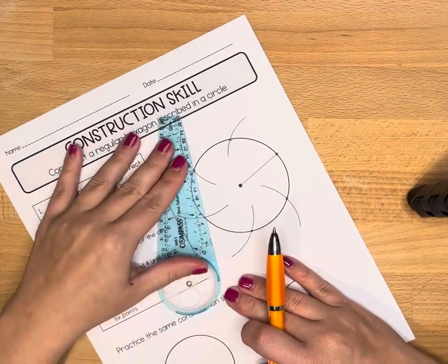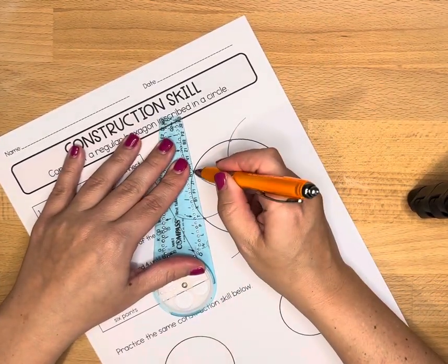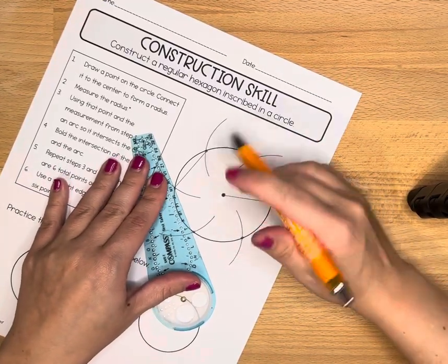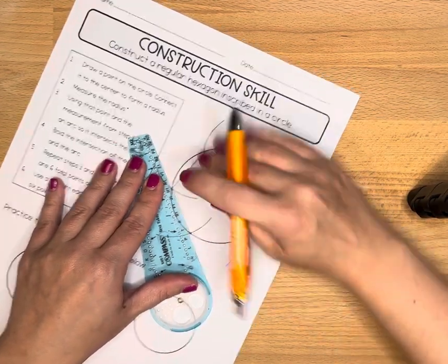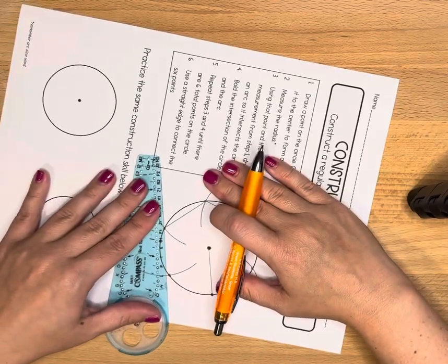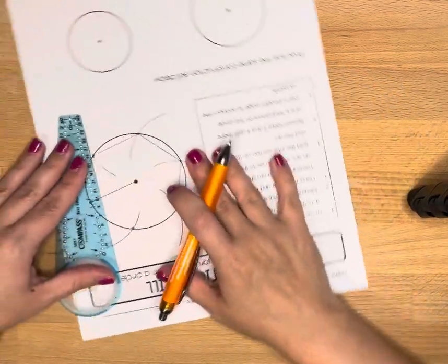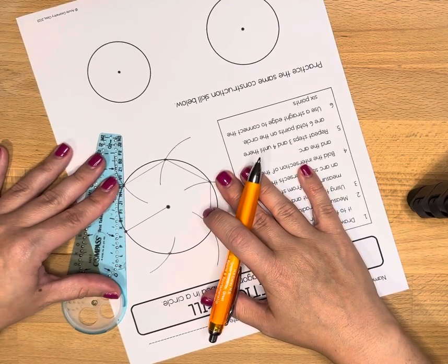We're going to now use a straight edge to connect those six points, and when we do this, notice each of the angles is what's called an inscribed angle.